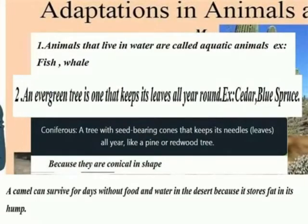What are evergreen trees? Name them. An evergreen tree is one that keeps its leaves all year round, e.g. cedar, blue, spruce.